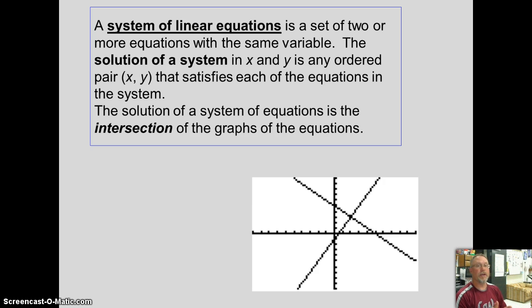A system of equations is a set of two or more equations with the same variable. The solution is an xy ordered pair and it works in each of the equations. The solution is also where they intercept. If you look at the graph down here, this is where it's intersecting. That's our point.